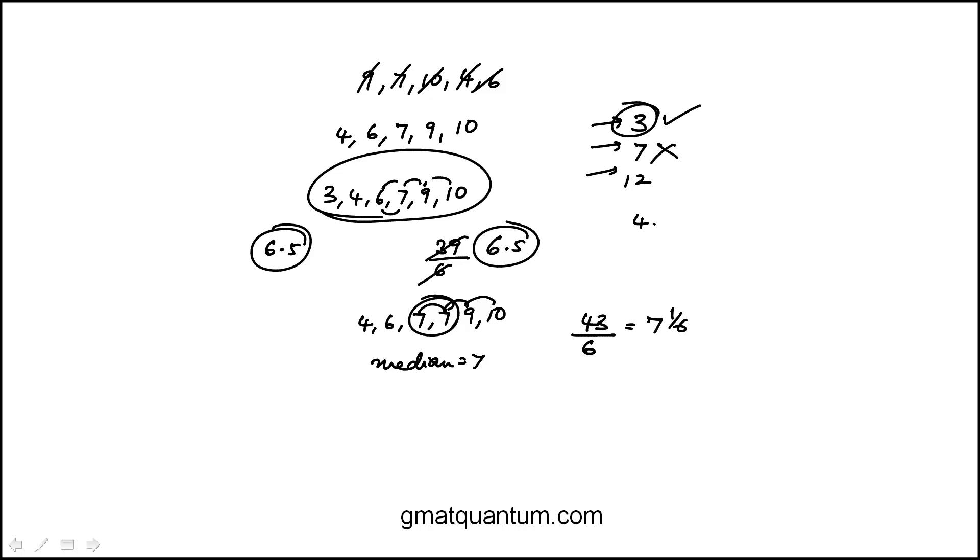Then finally for 12: 4, 6, 7, 9, 10, 12. Median is the average of the middle two, that's 8.